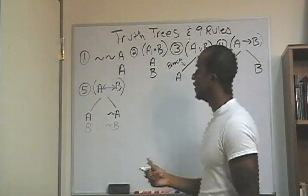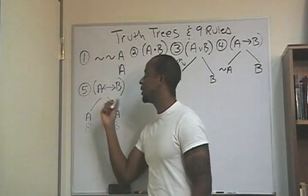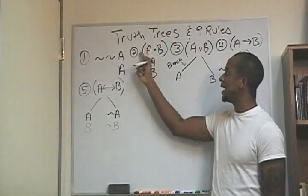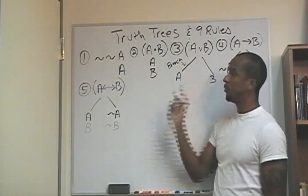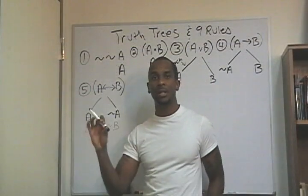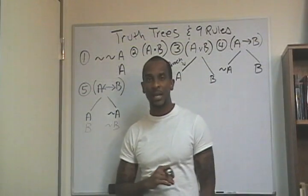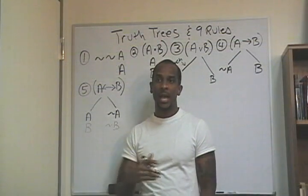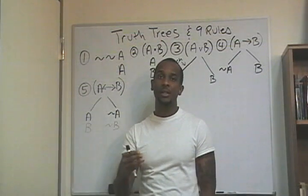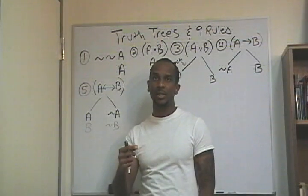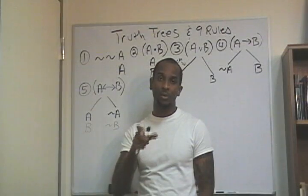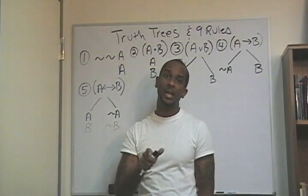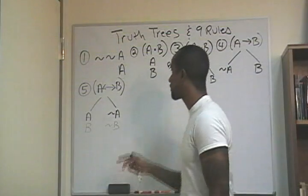In truth trees, this assumes that I don't have negations before these parentheses — that I'm not distributing a negation. Sometimes you'll have to distribute a negation, and there are rules that govern the distribution of negations in statements.